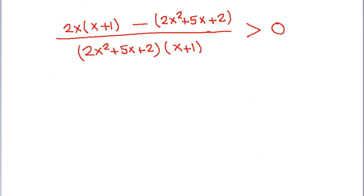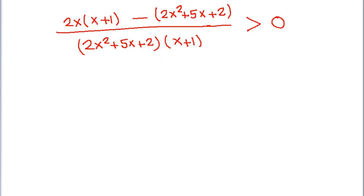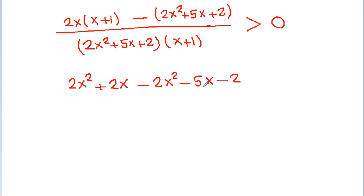Expanding the numerator gives 2x² + 2x − 2x² − 5x − 2. For the denominator, we factor 2x² + 5x + 2: since 2 × 2 = 4 and 4 × 1 = 4, the middle term 5 can be written as 4 + 1.